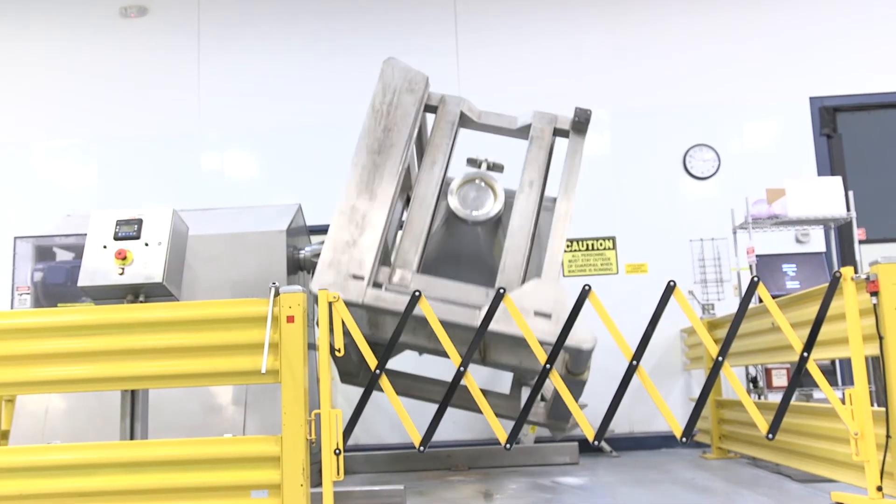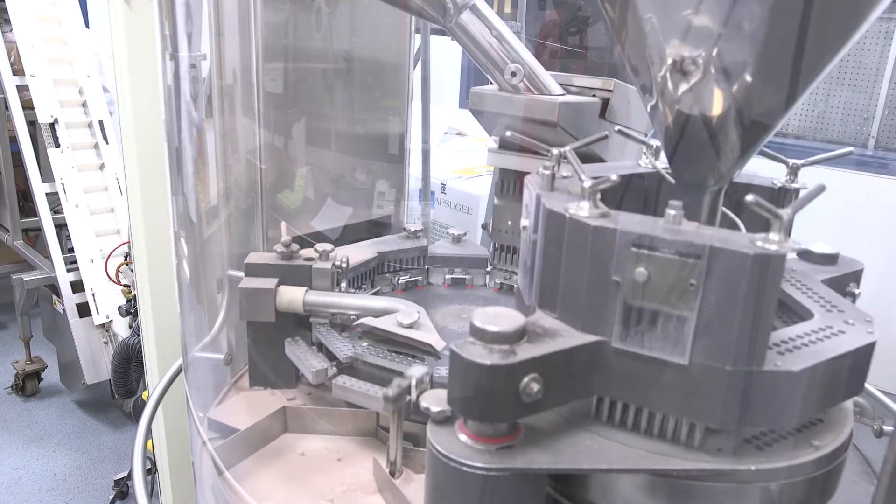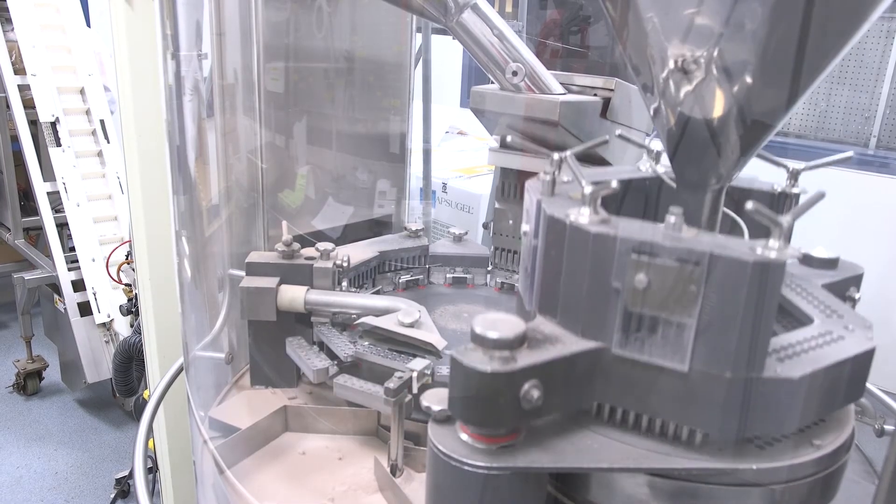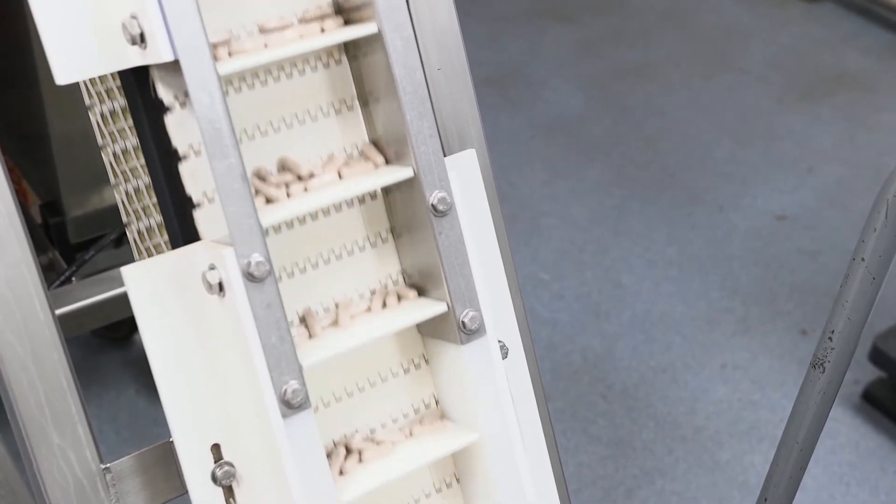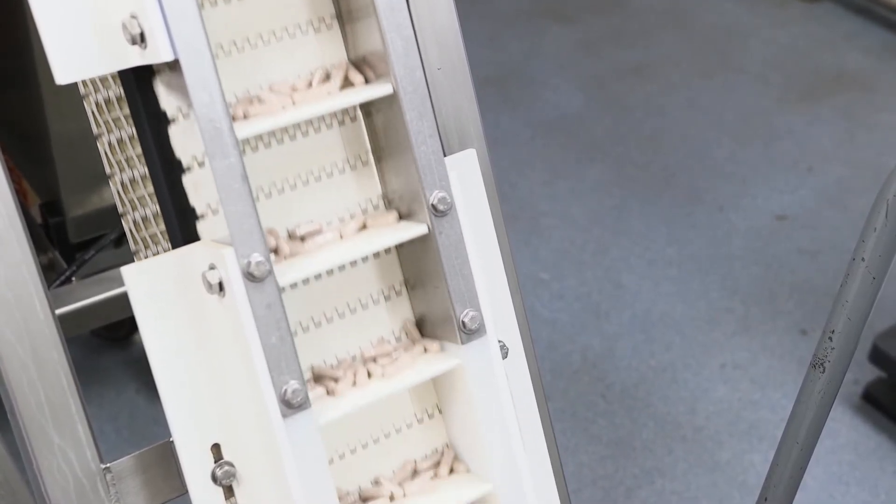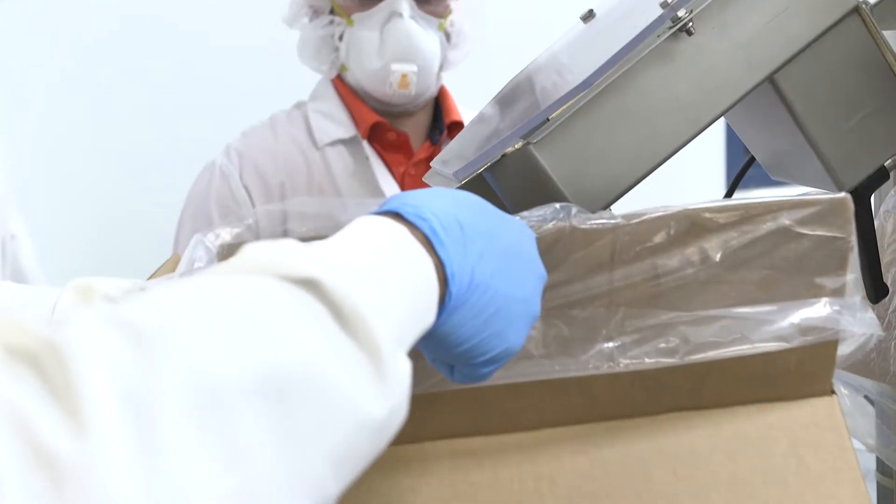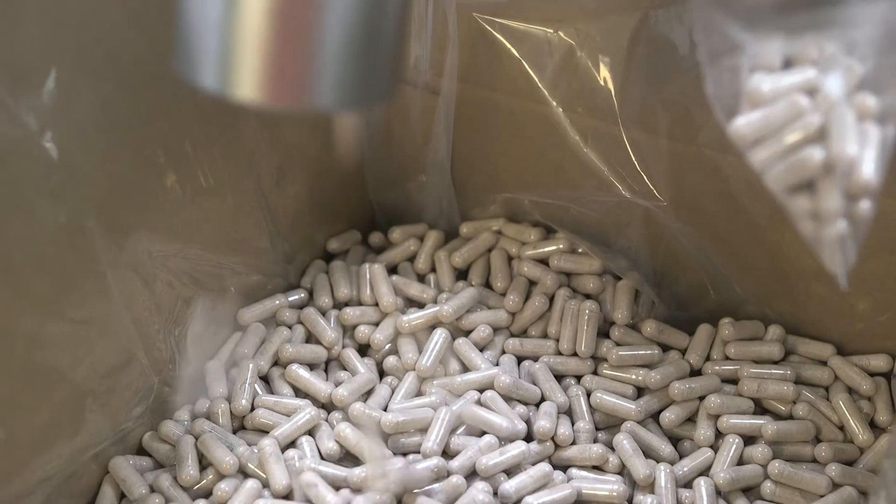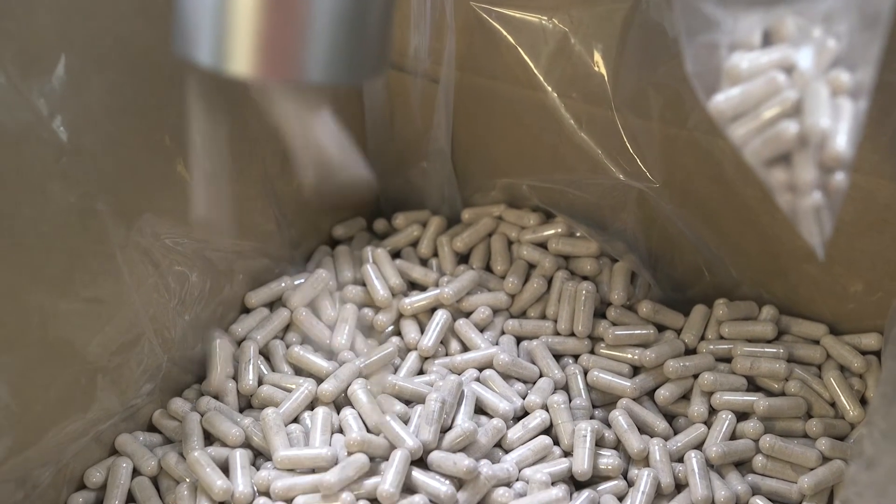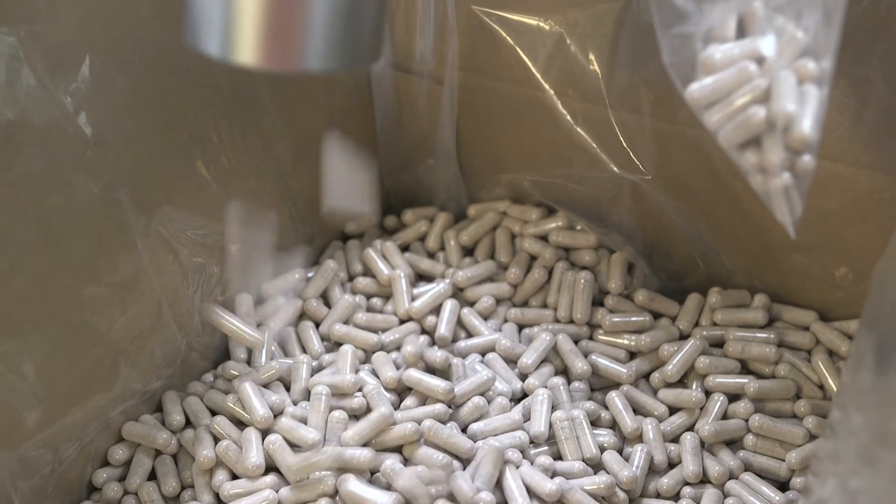And we'll take that tote to a docking station and then we gravity feed down to our encapsulation machines. And the encapsulation machines basically are going to open an empty vegetarian capsule. The echinacea material, the echinacea blend, will be added to the capsule. It'll be tamped at a couple of different stations and then the two-piece capsule is put back together and then it's ejected from the machine.